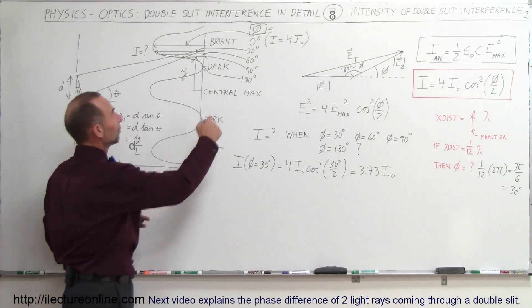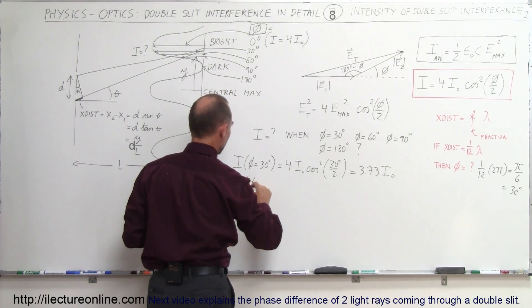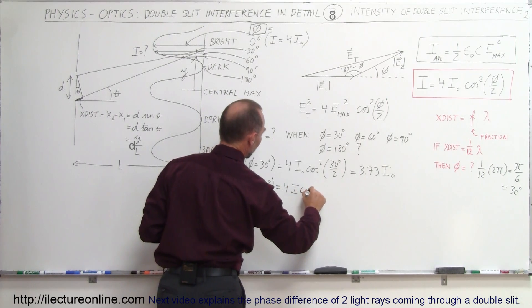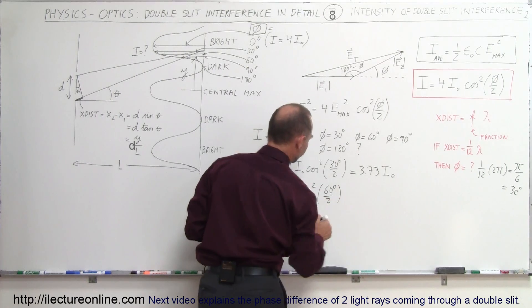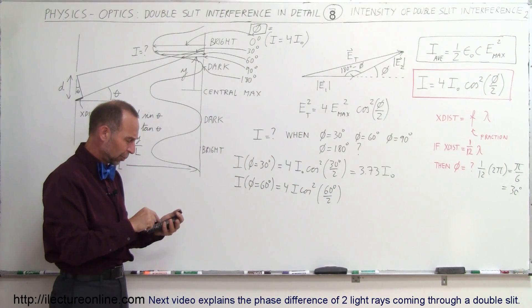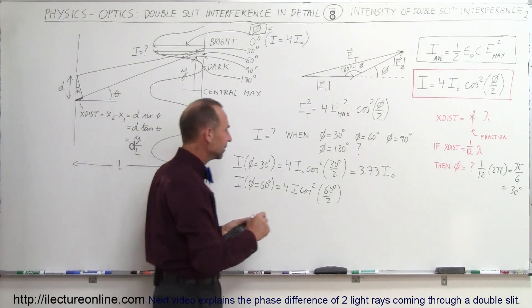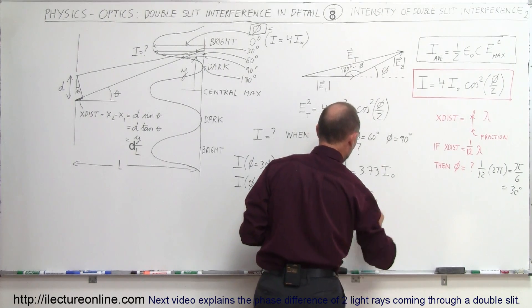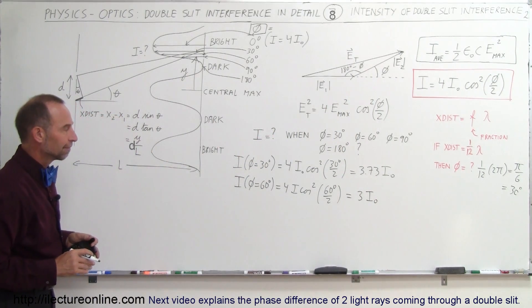When the phase difference is 60 degrees, the intensity equals 4 times I times the cosine squared of 60 degrees divided by 2, which is 30 degrees. Taking the cosine of 30, squaring it, and multiplying by 4, we get 3. So the intensity is 3 times the intensity of each individual beam at the slits.